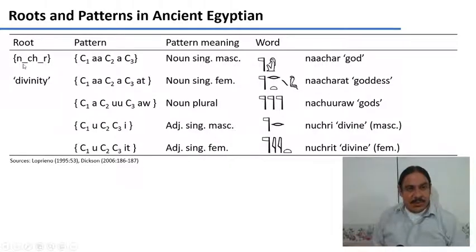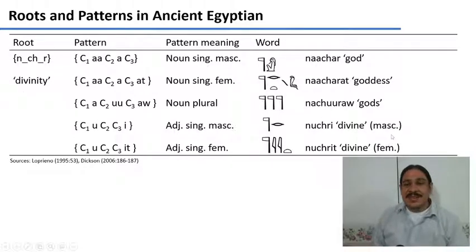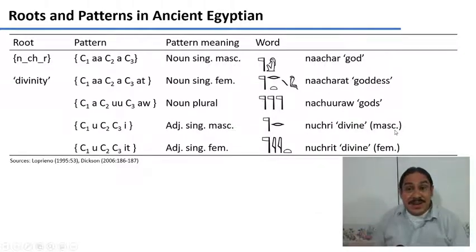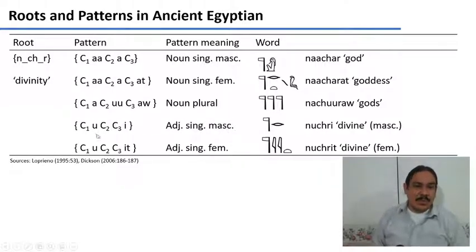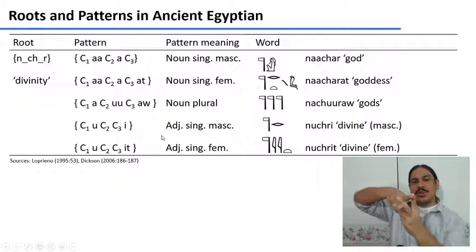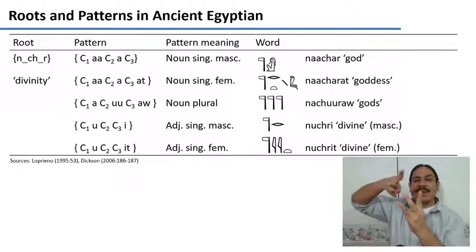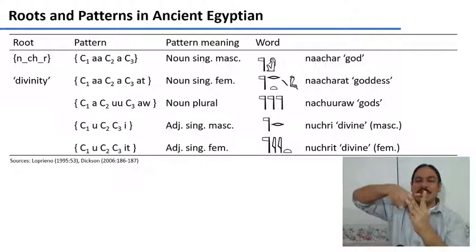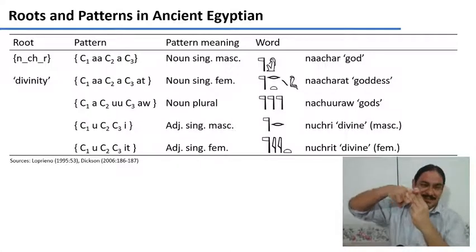You can also take this root and turn it into an adjective. Egyptian had masculine and feminine adjectives, just as French, German, or Spanish. The masculine singular adjective is formed with the pattern C1-U-C2C3-I, giving 'Nuceri' — divine. For the feminine, the pattern gives 'Nucerit' — divine in the feminine.